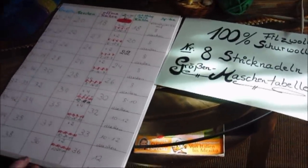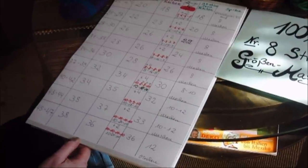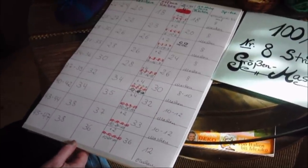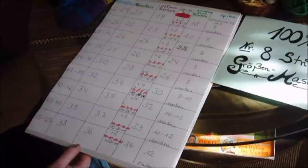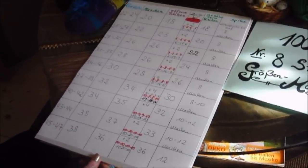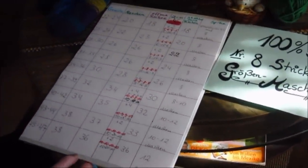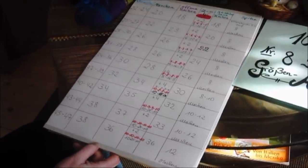Ist er zu klein, ist es auch kein Problem: den Hausschuh nochmal richtig nass machen mit Flüssigwaschmittel oder Flüssigseife und ihn wieder gewaltig ziehen auf die Größe die ihr braucht. Ich hoffe die Größentabelle hilft euch weiter und ist übersichtlich gestaltet, dass ihr gut zurechtkommt. Viel Spaß dabei!